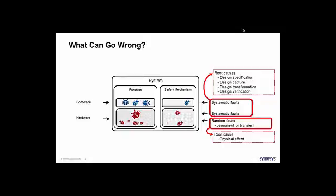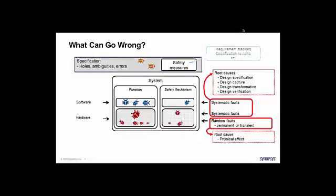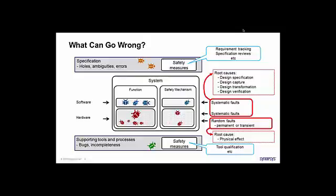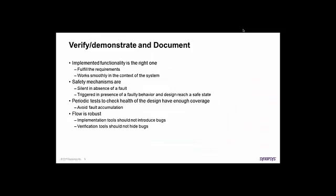And if you do again the same kind of things, you would see that specifications are subject to holes, to ambiguities. Of course ISO 26262 has implemented safety measures regarding those elements. For example, in the standard you would be required to do requirement tracking, specification reviews, etc. And at the opposite side, regarding the supporting tools and processes are also subject to bugs and incompleteness. Again you have some safety measures and those safety measures would be called tool qualification. There are of course additional measures but this is just a few examples.